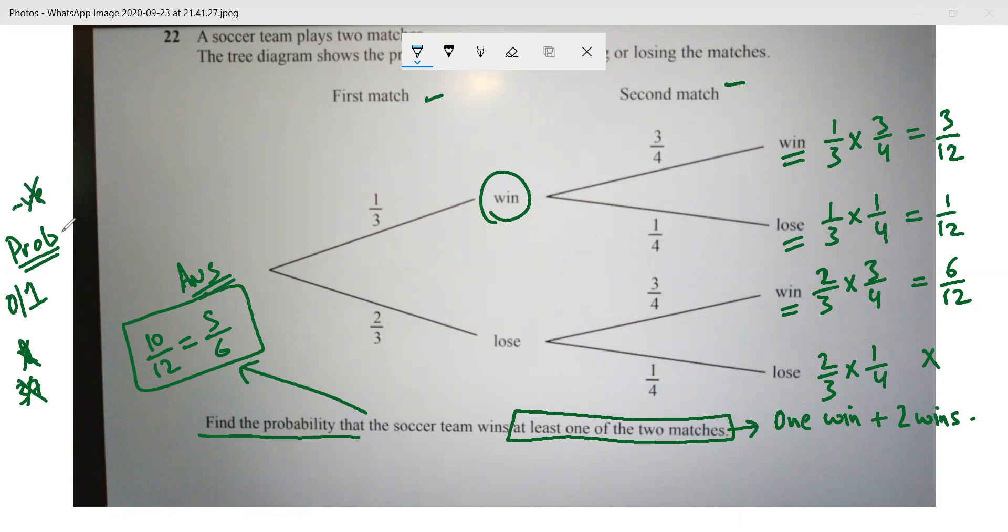So in probability, the best thing is your answer will lie only between this range. It can't go beyond this, it can't go beyond this. These two are not allowed.